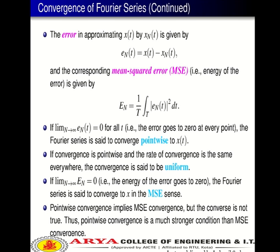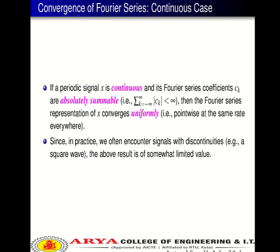If convergence is pointwise and the rate of convergence is the same everywhere, the convergence is said to be uniform. Pointwise convergence implies MSE convergence, but the converse is not true. Thus, pointwise convergence is a much stronger condition than MSE convergence.